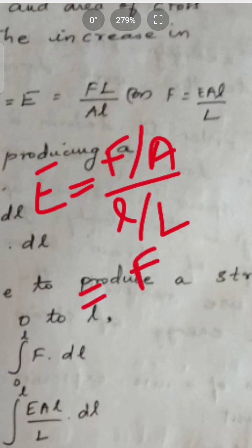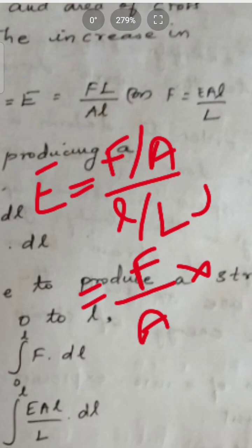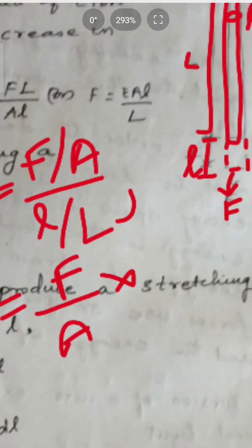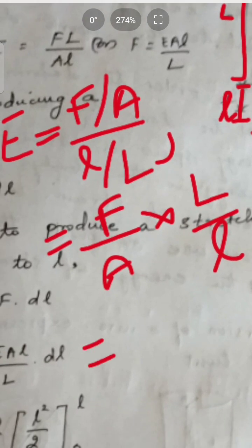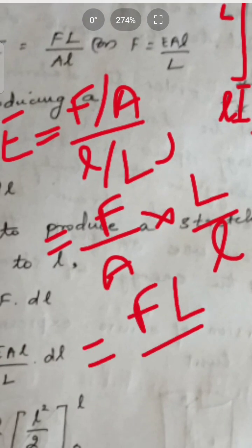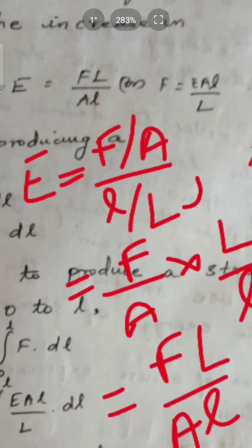Rearranging F by A, taking the reciprocal, we get capital L by small l. So E is equal to F L by A l, which gives us F is equal to E A small l by capital L.